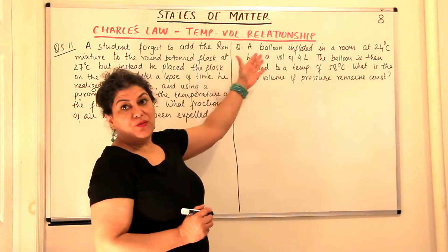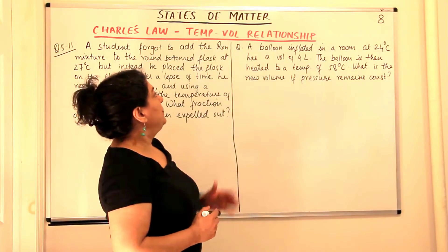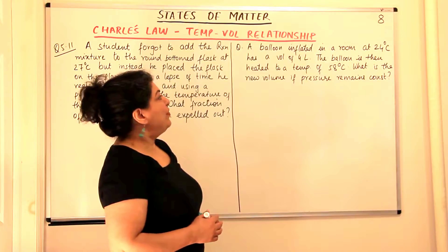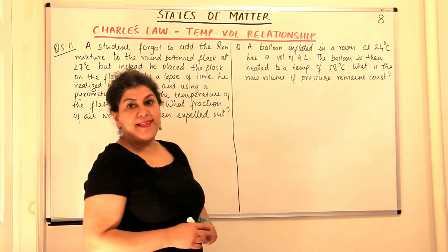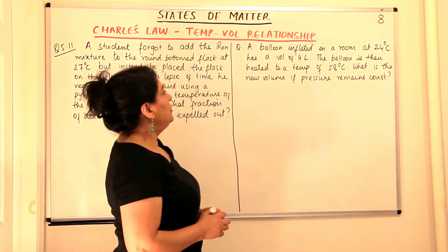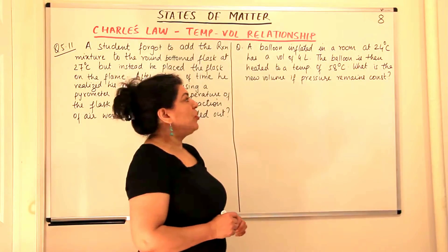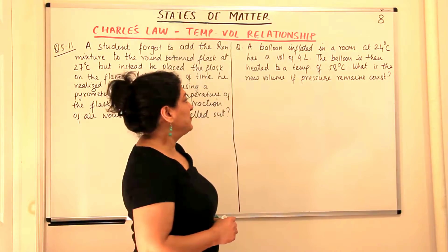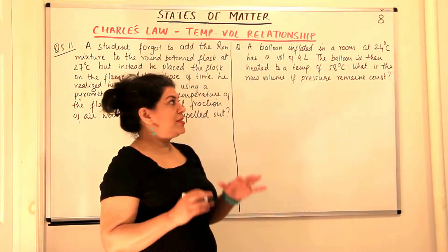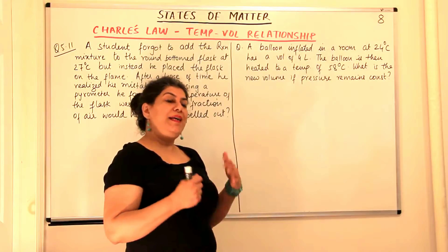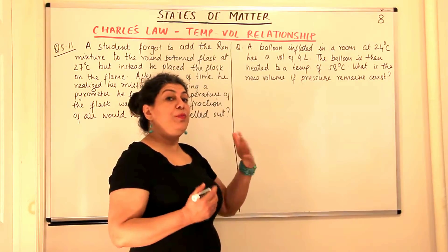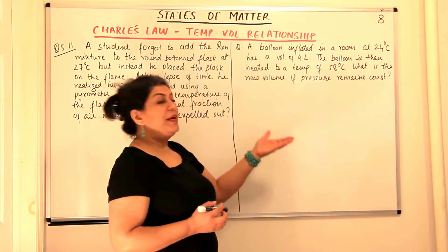So I would read out the first question here. A balloon inflated in a room at 24 degrees Celsius has a volume of 4 liters. The balloon is then heated to a temperature of 58 degrees Celsius. What is the new volume if pressure remains constant? Now this is comparatively simpler and it is very easy to understand that you would be using Charles Law here.